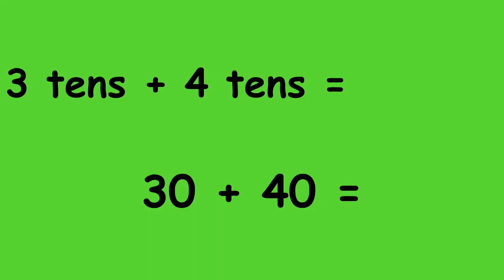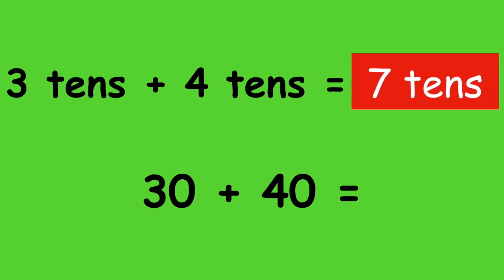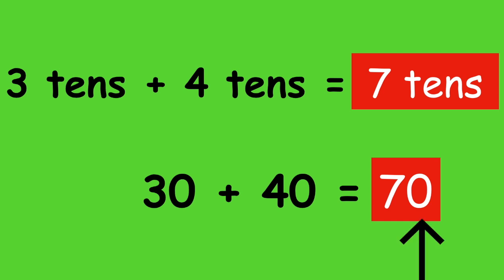Let's try looking at another problem. How about 30 plus 40? How can we solve this? We can solve this by using what we know about adding ones. If I know that 3 tens plus 4 tens is equal to 7 tens, then I know that 30 plus 40 is equal to 70, because all I need to do is add that 0 to the end to show that I'm adding groups of 10.